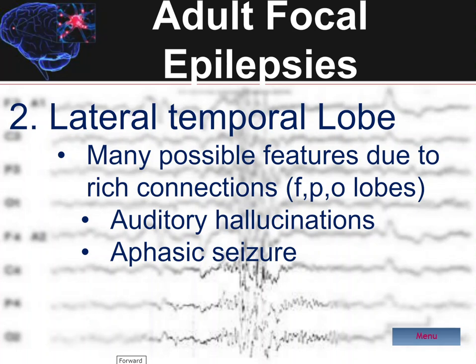One is that there may be auditory hallucinations if the activation is from Heschl's gyrus, or there can even be an aphasic type seizure during which the patient is awake and alert but cannot follow commands. This latter seizure type goes against the general rule that seizures cause a positive phenomenon — motor jerking or whatever — as opposed to TIAs which produce negative phenomenon or a lack of a certain ability. So a lateral temporal lobe seizure which produces an aphasia is actually producing a negative type of symptom, but is in fact a seizure.